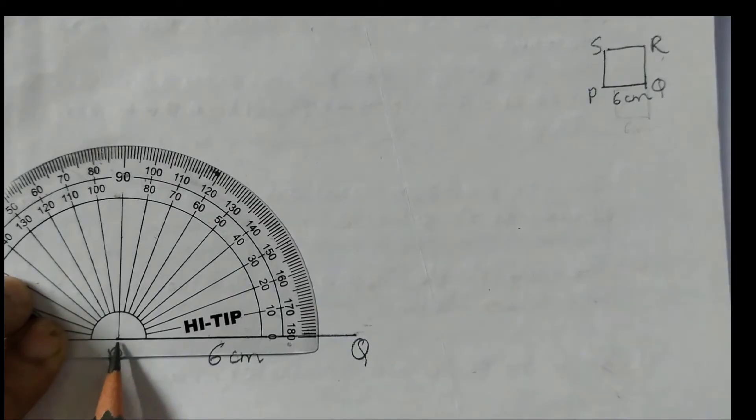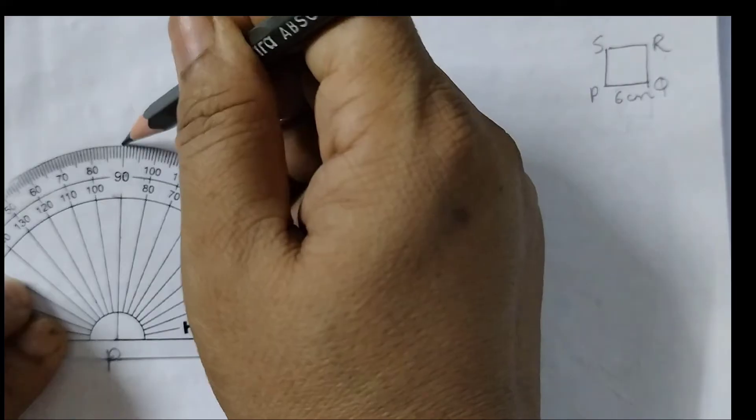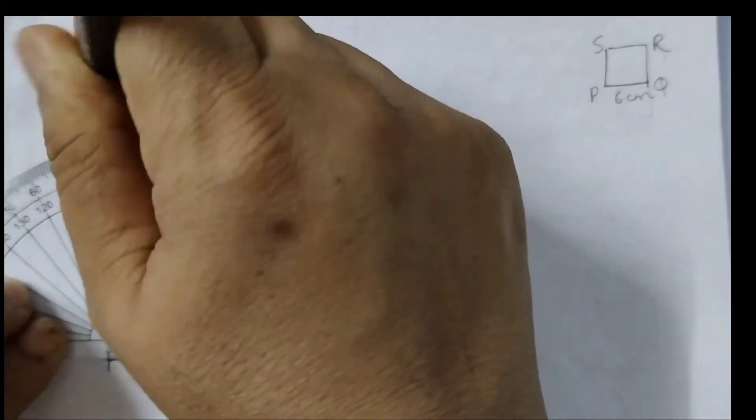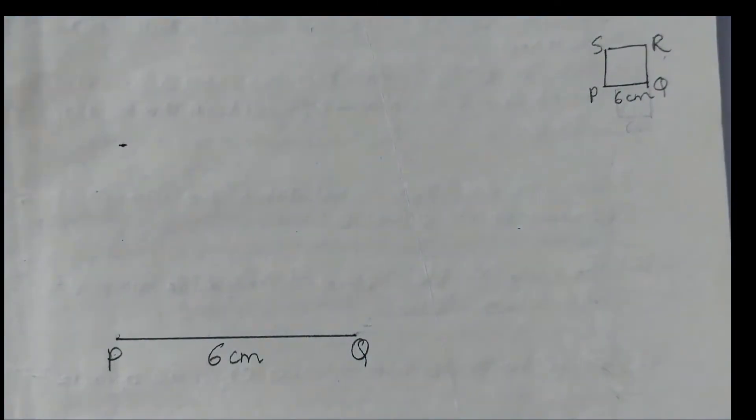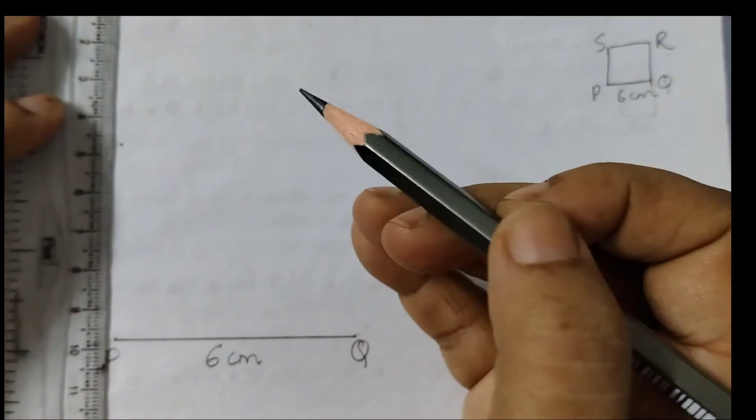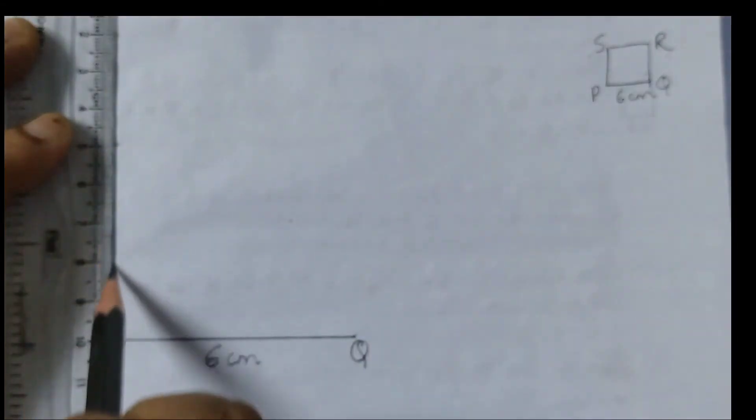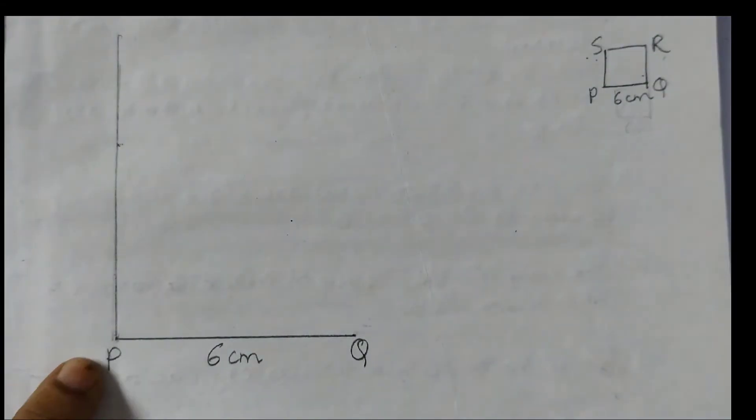Now you can see here. This point is the same point and this is 90 degrees here. So I will mark a point here at 90 degrees. Okay, and I will join these two points. This is a perpendicular that means 90 degrees angle. Done.